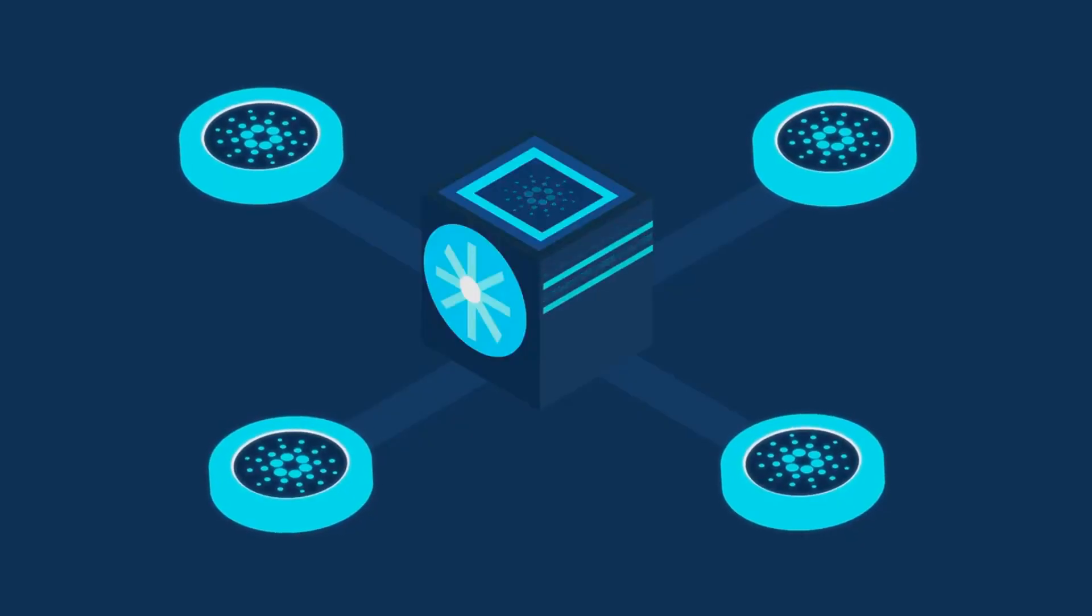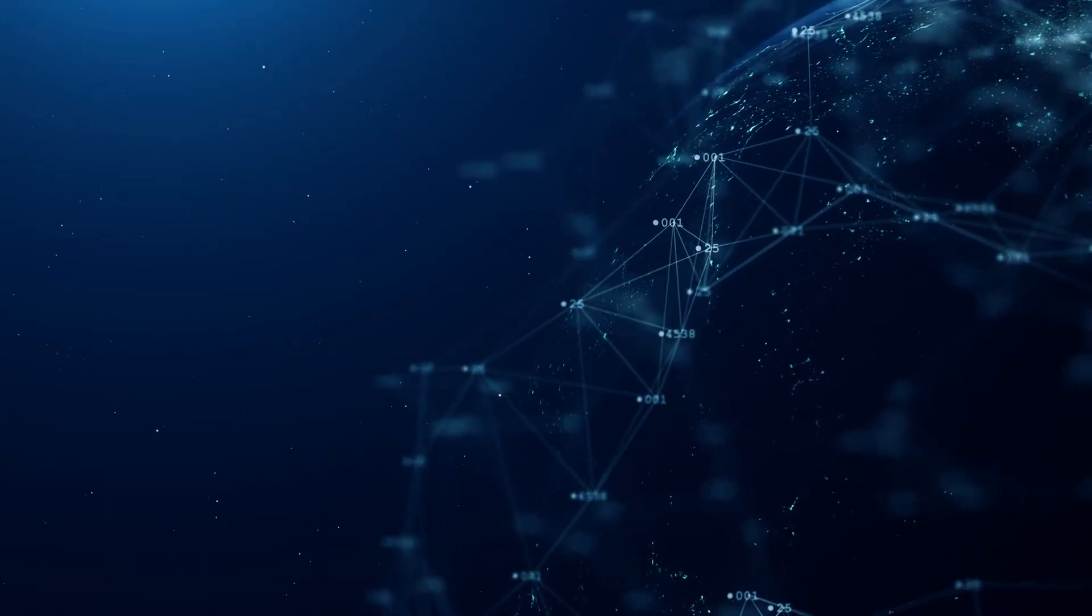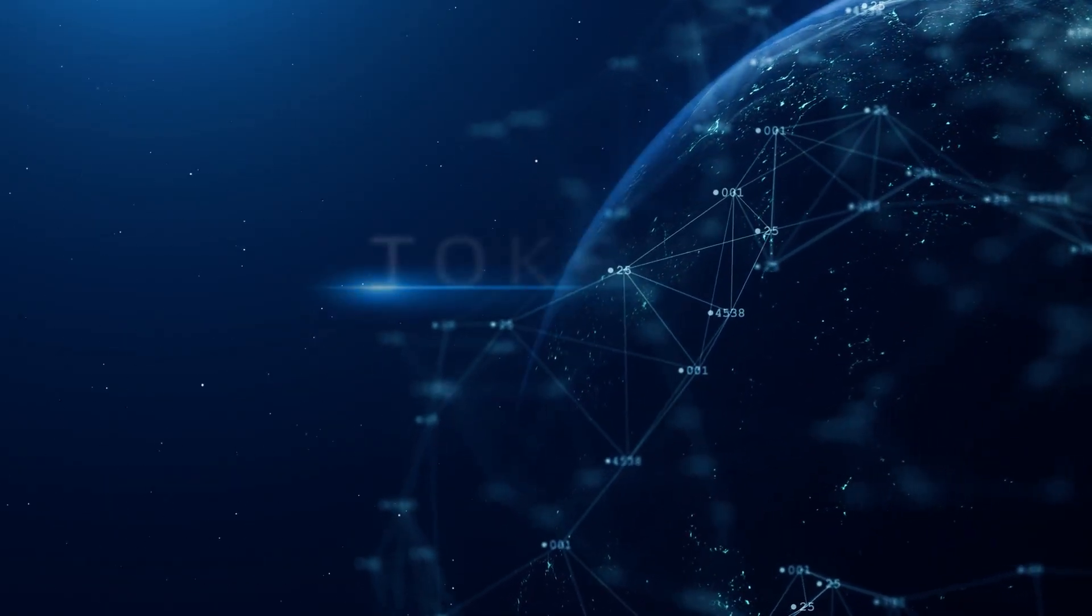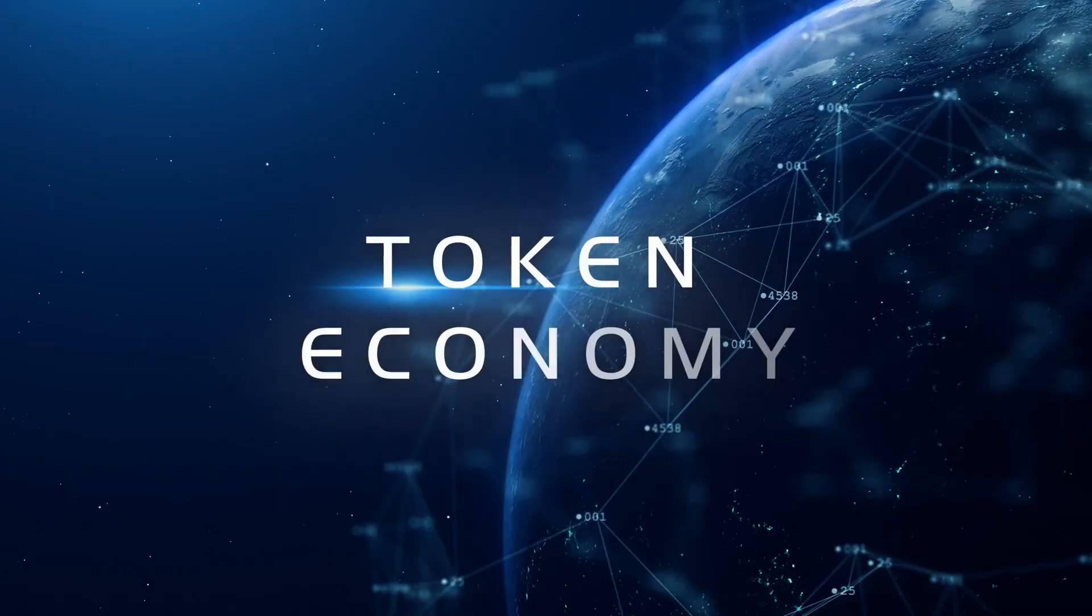Next, there's the technology. This is where you find terms like proof of work or proof of stake, basically how the network runs. You'll see tokenomics too, how many coins exist, why and what they're actually for.